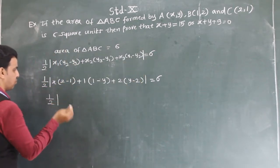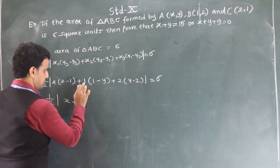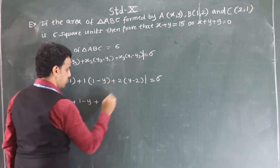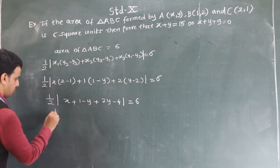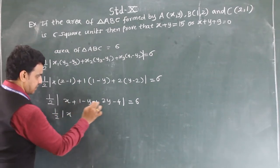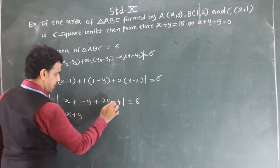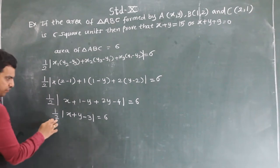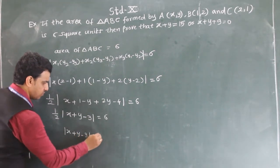Simplifying: half times |1·x + 1(1-y) + 2(y-2)| = 6, which gives half times |x + 1 - y + 2y - 4| = 6, and simplifying further: half times |x + y - 3| = 6. Multiplying both sides by 2 gives |x + y - 3| = 12.